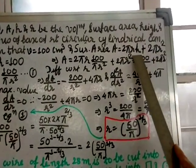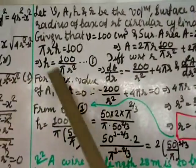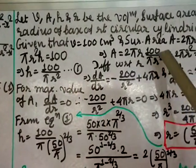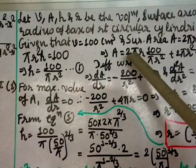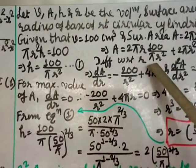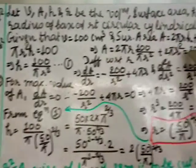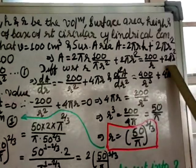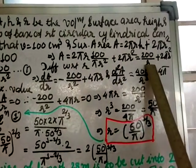Surface area A = 2πrh + 2πr squared. Volume of cylinder πr squared h = 100, so h = 100/(πr squared). Call this equation 1. Substituting h into the surface area formula: A = 2πr times (100/(πr squared)) + 2πr squared.